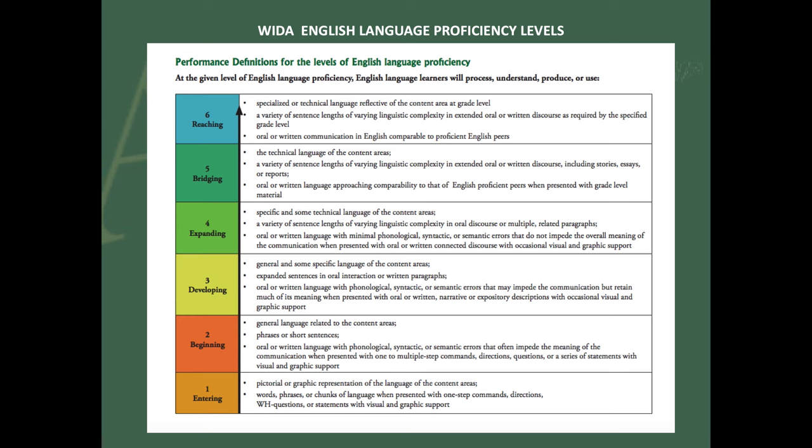These are the really new English speakers, and the scale goes all the way up to 'reaching,' which is somebody who is just like a native English speaker — they have all of the vocabulary a native English speaker would have. The kids that we have in our schools are usually anywhere in between, especially at the elementary levels.